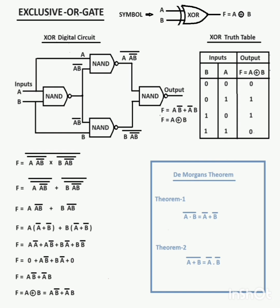The truth table is also given here. The output of the exclusive OR gate is high only if one bit is 0 and the other bit is 1, or one bit is 1 and the other is 0. The output is zero only if both bits are the same — both zero or both one. Thank you.